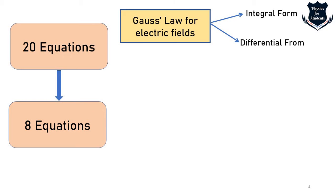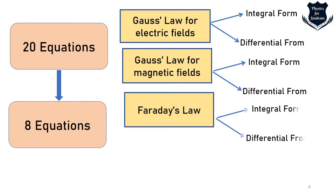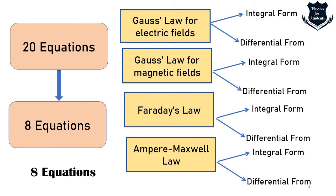The eight equations consist of: Gauss's law for electric fields, which has differential and integral forms; Gauss's law for magnetic fields, also in two forms; Faraday's law in integral and differential form; and the Ampere-Maxwell law, also in both forms — giving four concepts, each with two forms, totalling eight equations.